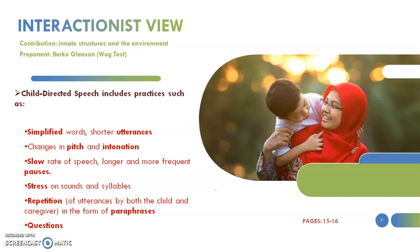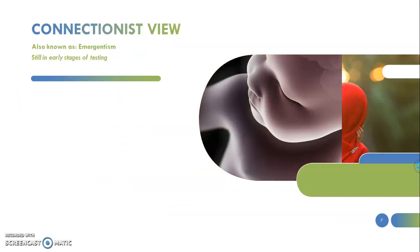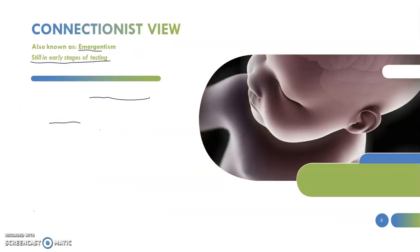You may refer to page 16 in the textbook for a conversation between a baby named Allison and her mother to see how child-directed speech happens. Now that we're done with the interactionist view, let's move to the connectionist view, also known as emergentism.